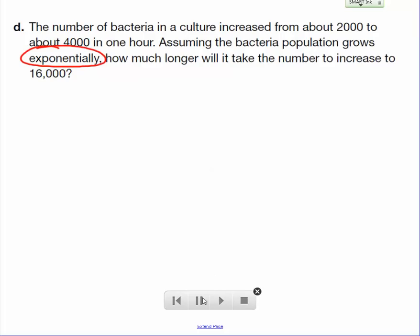Well, it's growing exponentially. If they said it's growing at a constant rate, then that would mean it's going up from 2,000 to 4,000. It's going up by 2,000 every single time, but it's growing exponentially. That means it's doubling.